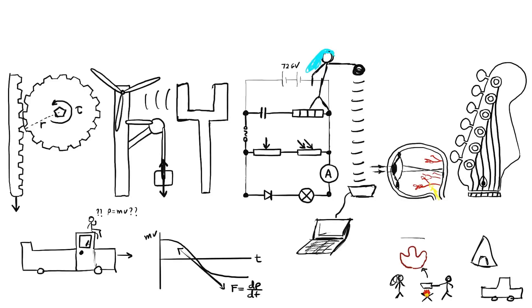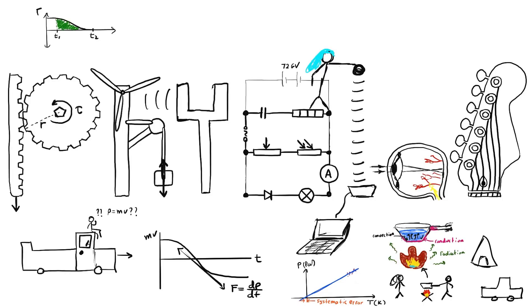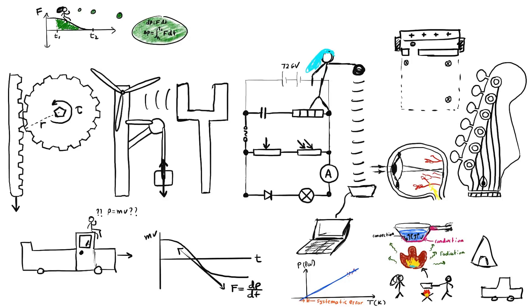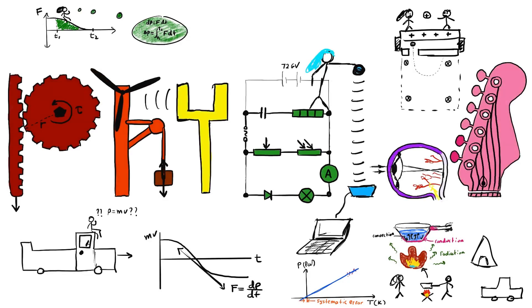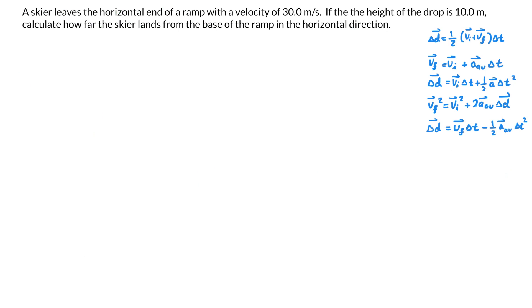Hello and welcome to this video lesson. In this video lesson we will be looking at one example which deals with projectile motion. In this question we get a skier that leaves the horizontal end of a ramp with a velocity of 30 meters per second. We're given that the height of the drop is 10 meters and we want to calculate how far the skier lands from the base of the ramp in the horizontal direction.